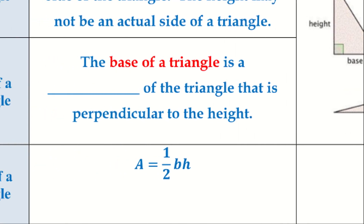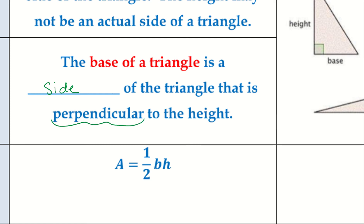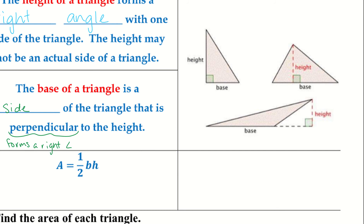The base of a triangle is a side of the triangle that is perpendicular to the height. Perpendicular means it forms a right angle. We can see that the height, even when it's on the outside, creates that 90-degree angle coming off from the base. The dotted lines are there just to show us that if we extend the base a little bit to find the height, that gives us what we need. But this is the entire base on each triangle.